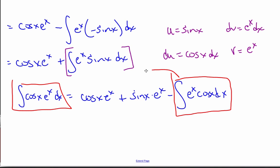And so I'm going to add it over to the other side. And when I do that, I end up with two integrals of cosine x e to the x dx is equal to cosine x e to the x plus sine x times e to the x.